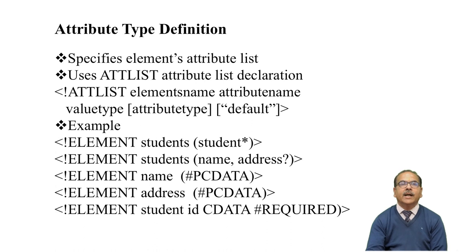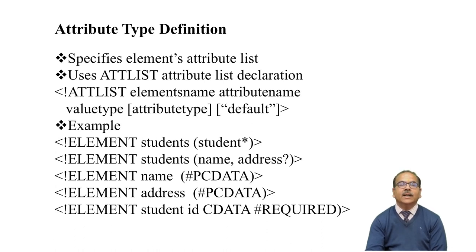The next feature is attribute type definition. We use ATTLIST for displaying the attribute list declaration, starting with the exclamation sign. For example, student with asterisk means one or more, and question mark for address meaning there is only one address. There are different elements — element student, student name with PCDATA. Required means CDATA character data which is required.